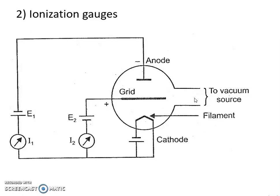The electrons are collected by the grid and a current I2 is produced in the grid circuit. The rate of ion production is proportional to the number of electrons available to ionize the gas and the amount of gas present.